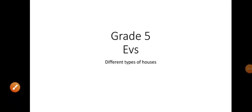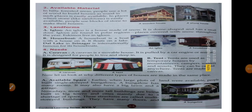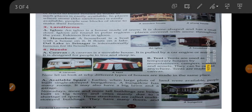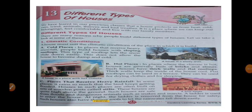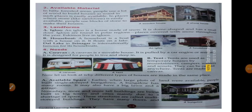Assalamualaikum dear students, hope you all are doing good. Today in this video we are going to continue with the previous topic, that is different types of houses. In the previous video we discussed about certain houses which are made according to climatic conditions — like stilt houses, houses with slanting roofs, and houses with flat roofs. Now today we are going to start with available material.